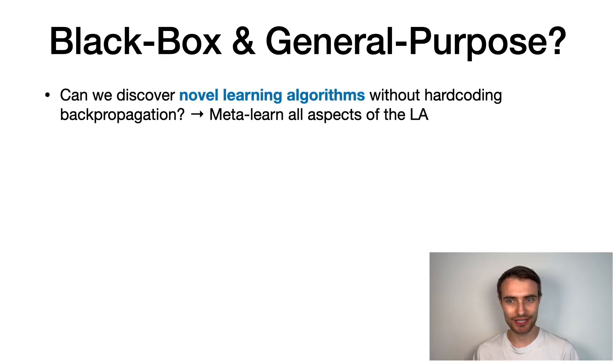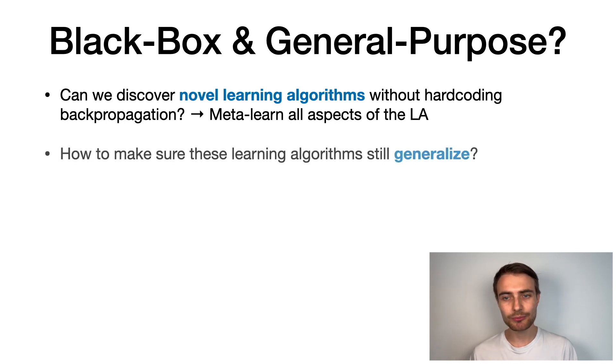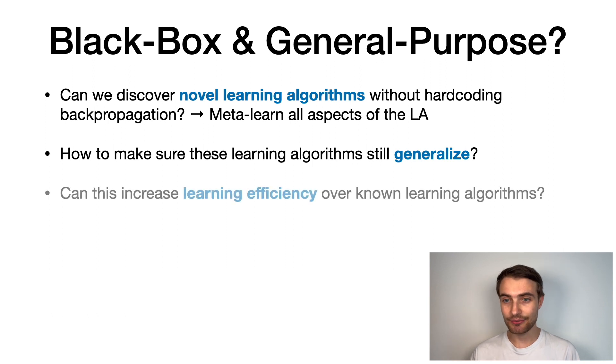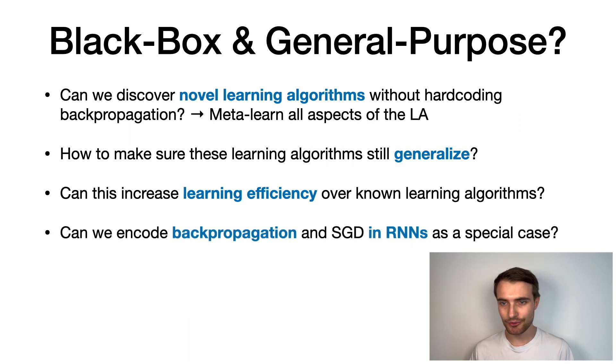The natural question is, can we discover novel learning algorithms without even hard-coding backpropagation into them? This would enable meta-learning all the aspects of the learning algorithm. How to make sure these learning algorithms still generalize? And can this increase learning efficiency over known learning algorithms? And as a special case, can we encode backpropagation and gradient descent purely in the recurring dynamics of an RNN? These are the questions we focus on in this paper.